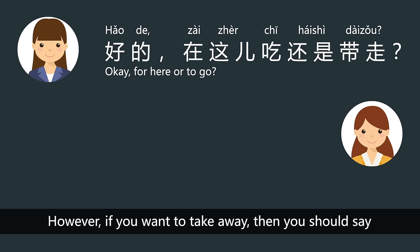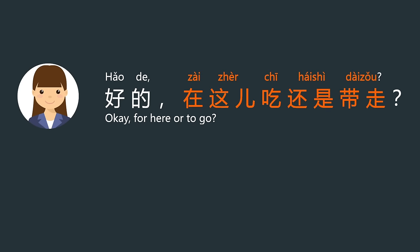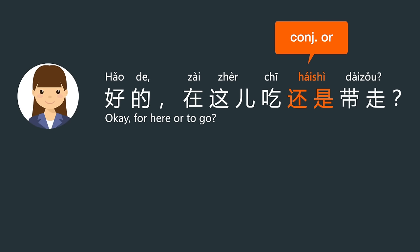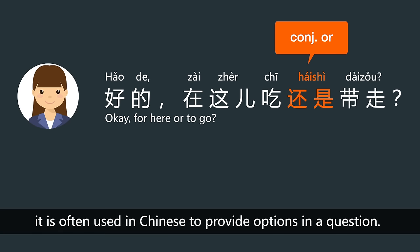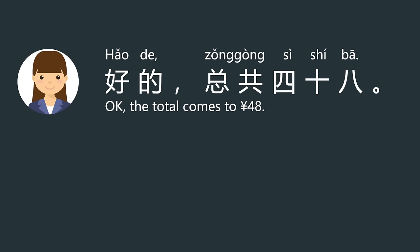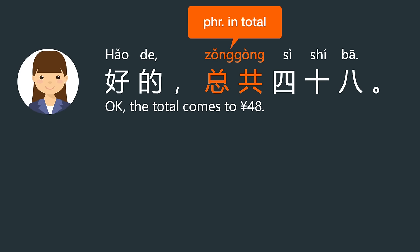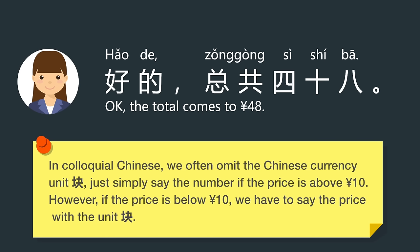However, if you want to take away, then you should say 带走. 在这儿吃还是带走 — 还是 means 'or,' and it is often used in Chinese to provide options in a question. 好的. 总共四十八 — 总共 means 'in total.' In colloquial Chinese, we often omit the Chinese currency unit 块 and simply say the number if the price is above 10.